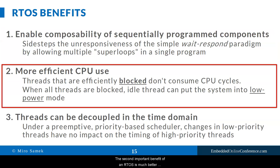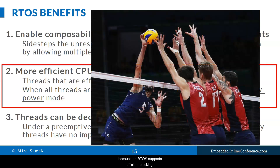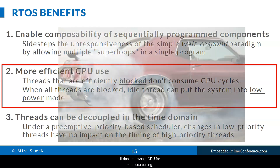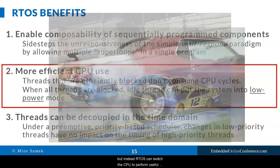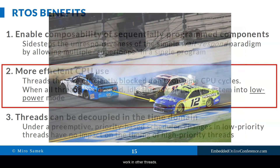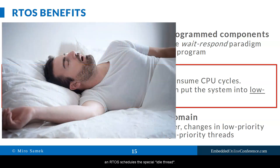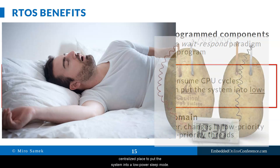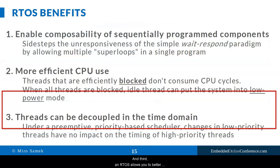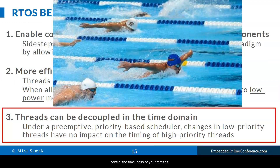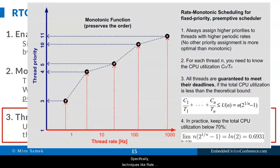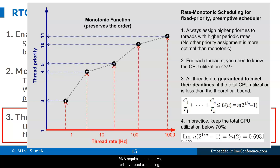Here are the main benefits of an RTOS. First, an RTOS enables you to decompose embedded software into simpler components programmed with the wait-respond sequential paradigm. Multiple threads can wait for multiple events in parallel, so the application as a whole remains responsive. Second, an RTOS provides much better use of the CPU through efficient blocking — while a thread is waiting, it does not waste CPU on polling, and the RTOS can switch the CPU to perform useful work elsewhere. Also, when all threads are blocked, an RTOS schedules the special idle thread, providing a convenient centralized place to put the system into a low-power sleep mode. Third, an RTOS allows better control of timeliness. Techniques like Rate Monotonic Analysis describe conditions under which threads can be proven to always meet their hard real-time deadlines, which requires preemptive priority-based scheduling as provided by most RTOSes today.